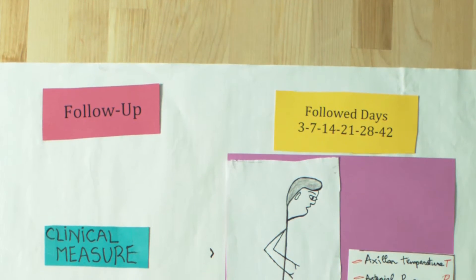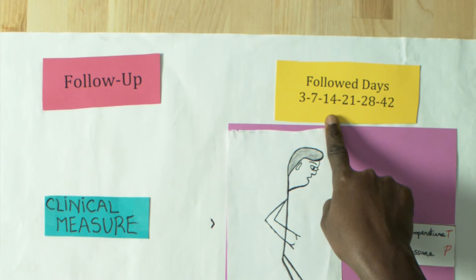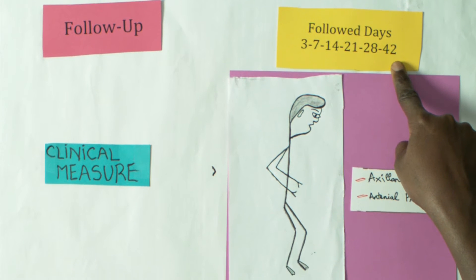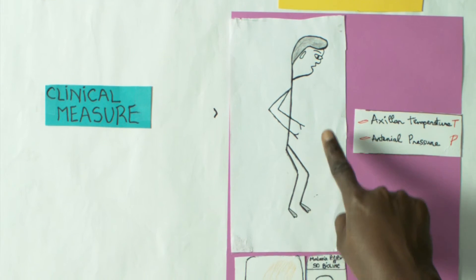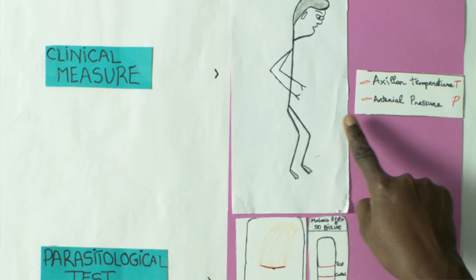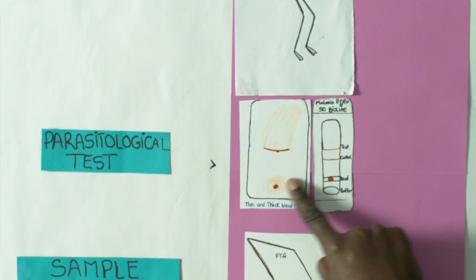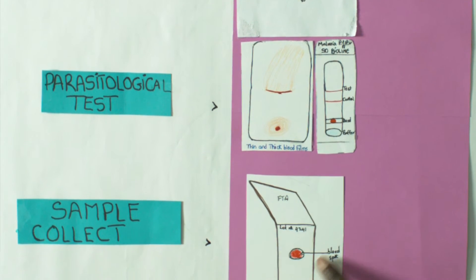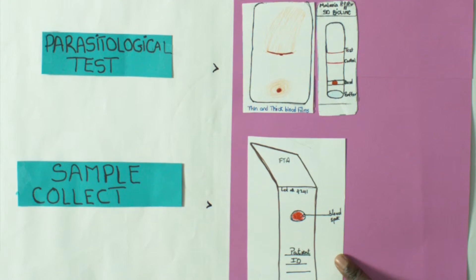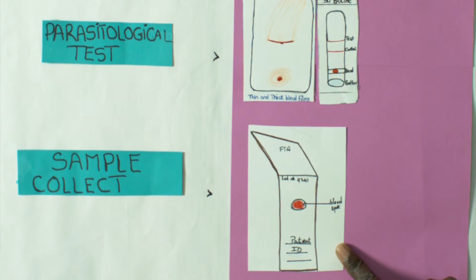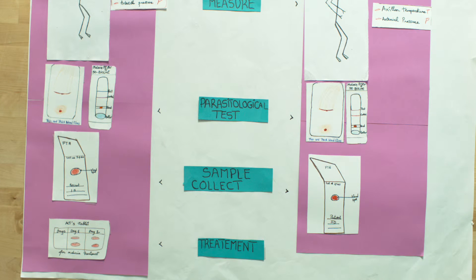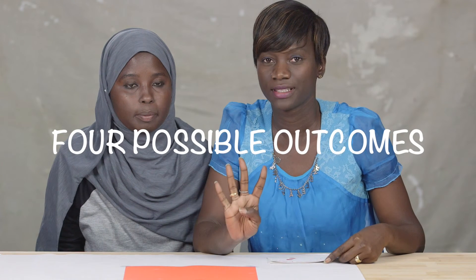For the other follow-up days — day three, day seven, day 14, day 21, day 28, and day 42 — when the patient comes to the hospital, perform clinical measures and parasitological tests, and collect the sample with the filter paper for DNA analysis. On days one and two the patient receives treatment, while on the other follow-up days the patient also takes treatment if indicated. You can have four possible outcomes.